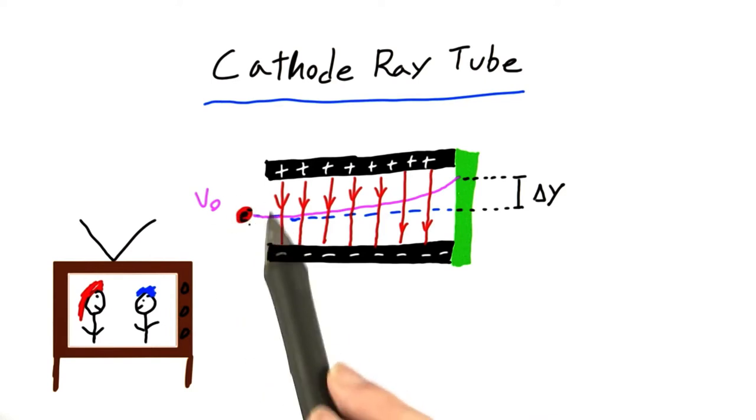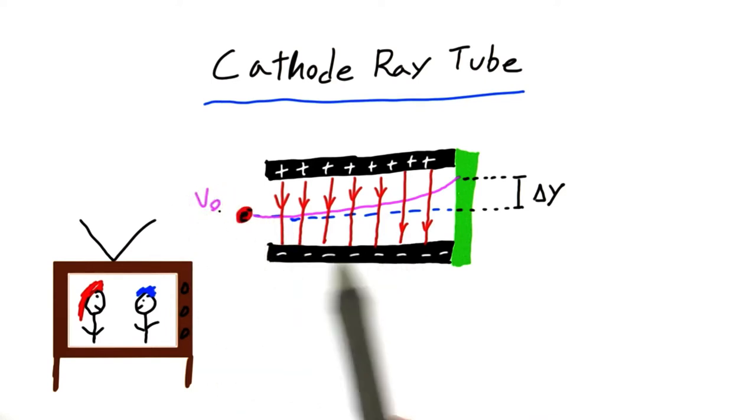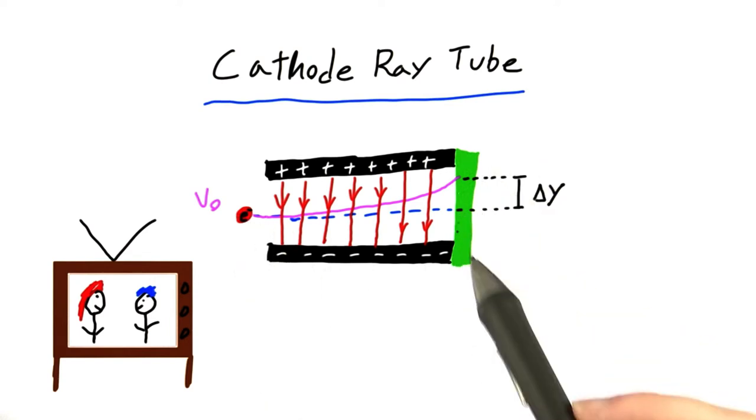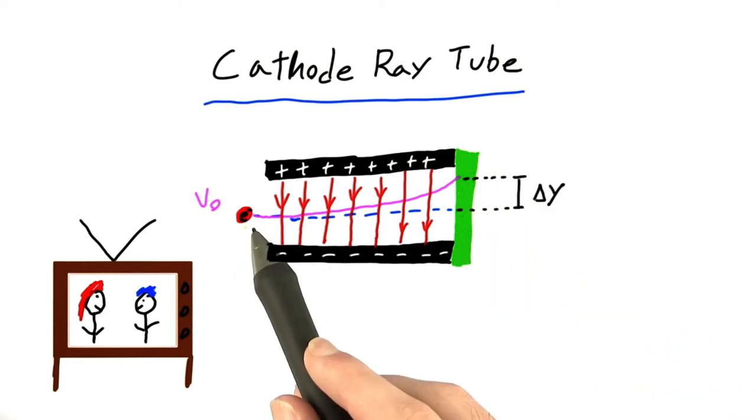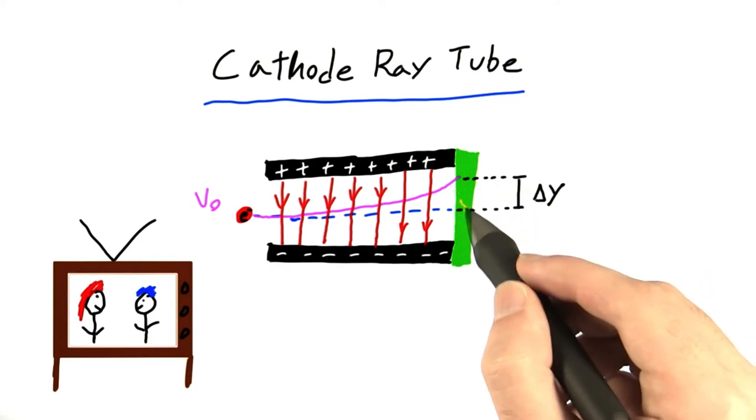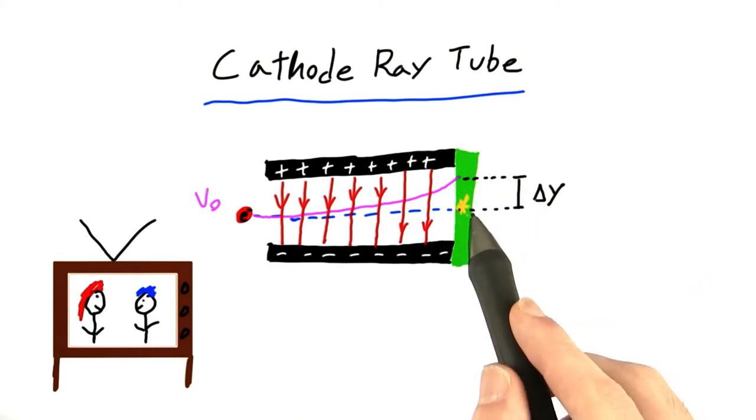So on one end of the tube, we have an electron here, and we give it some really large initial velocity v0, such that it shoots across this tube towards this green screen over here. And when this electron hits the screen over here, it temporarily causes it to light up, producing a dot on the screen.